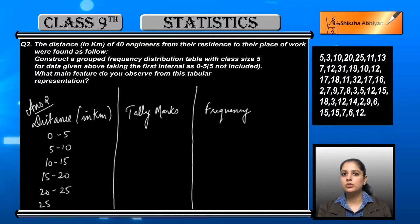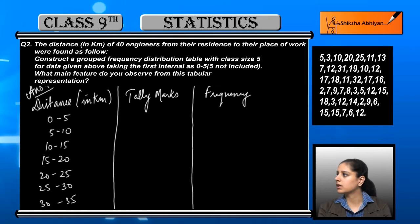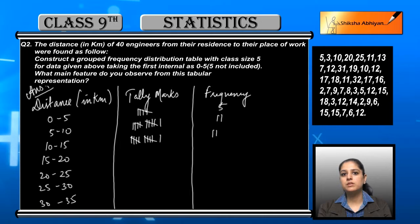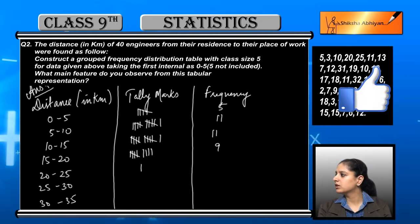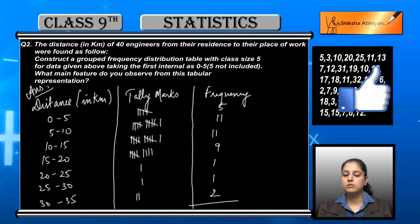Now for 0 to 5, our distances are 5. For 5 to 10, we count and get 11. For 10 to 15, the distances have frequency 11. For 15 to 20, the distances have frequency 9. Next, 20 to 25 has only one falling in it, 25 to 30 also has one, and 30 to 35 also has one.